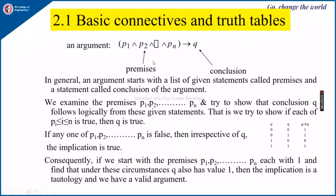Next, we can see that an argument or reasoning will have various propositions called premises, and if all these are true, which implies Q — the conclusion — is also true. The argument starts with a list of given statements called premises, represented by P1, P2, ..., Pn, and a statement called the conclusion Q. If all your premises are true, we can arrive at the conclusion that Q will also be true. We examine the premises and try to show that Q logically follows — that is, if each Pi (1 ≤ i ≤ n) is true, then Q is also true.